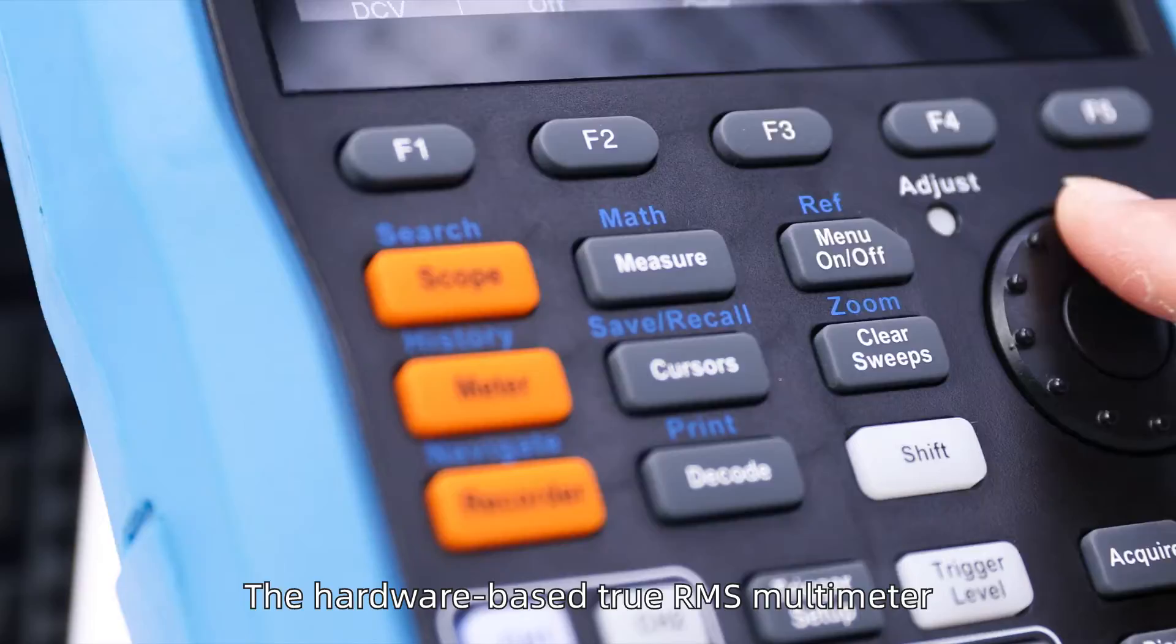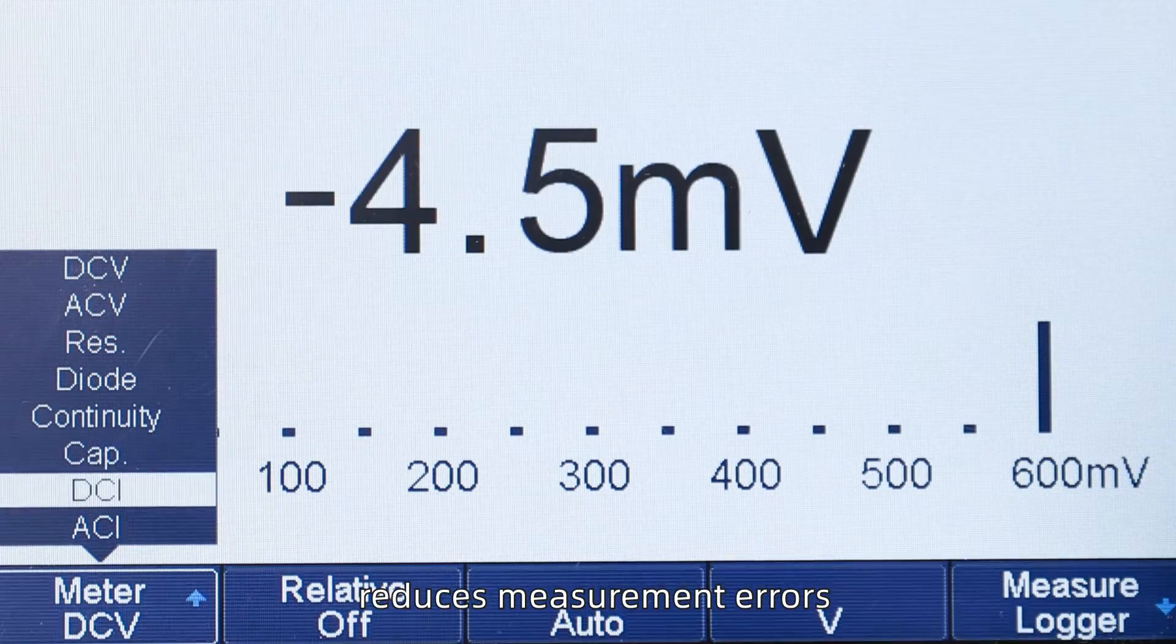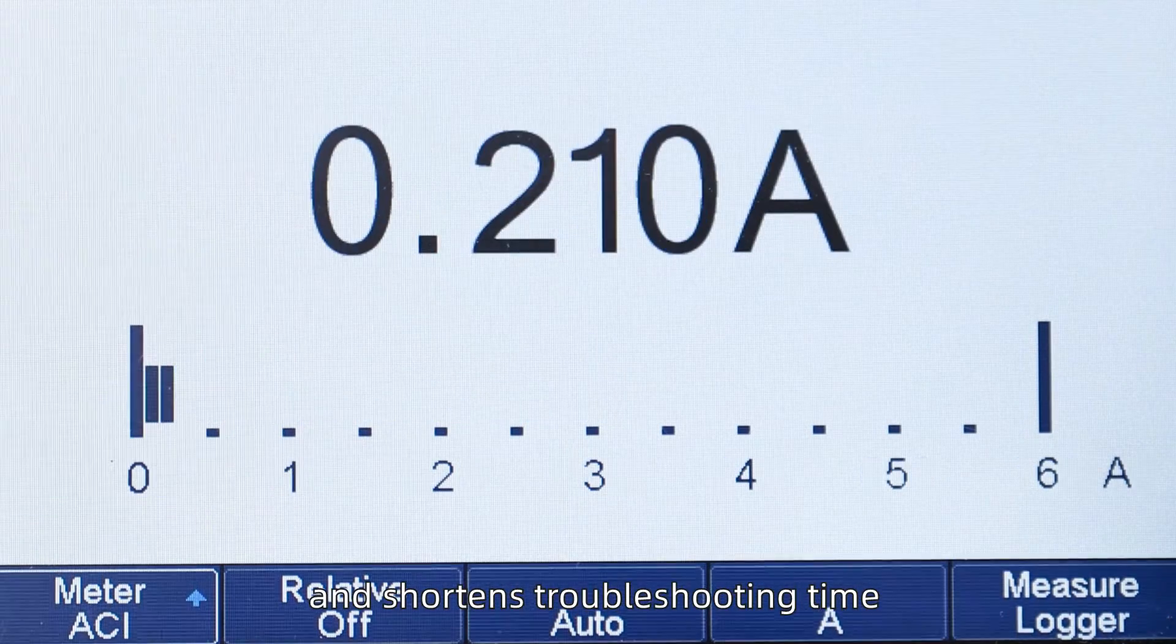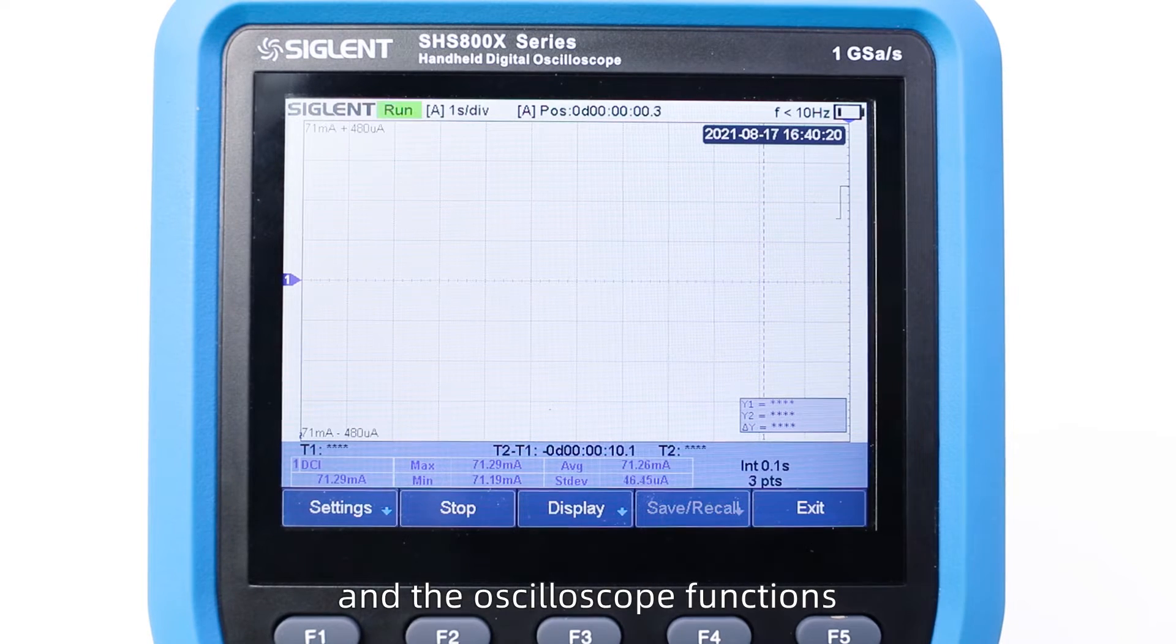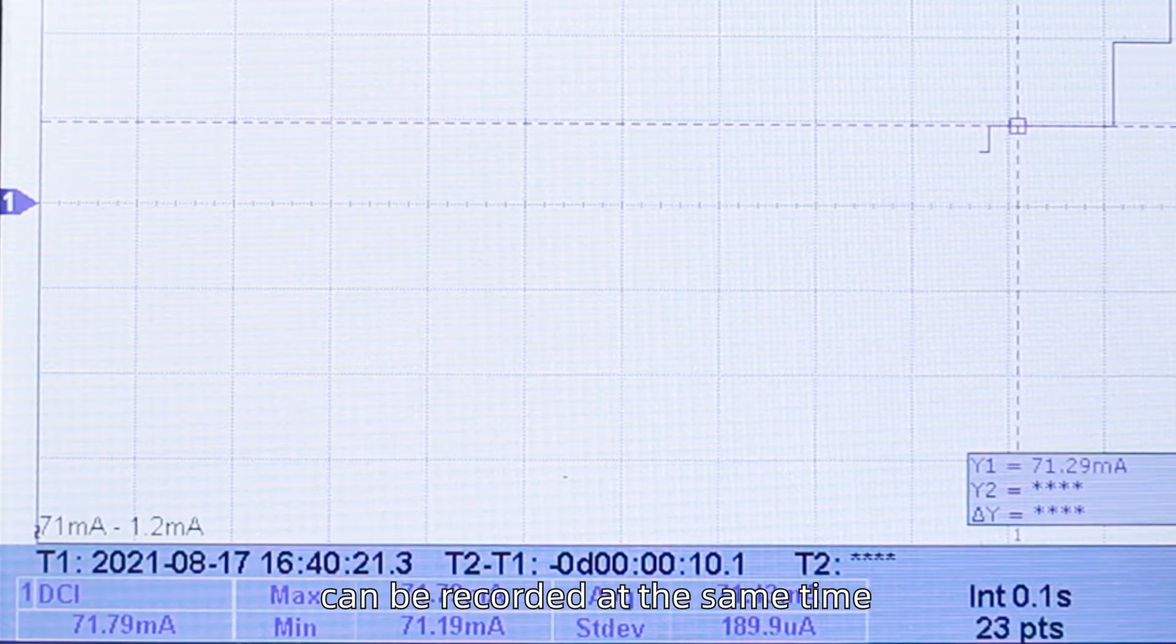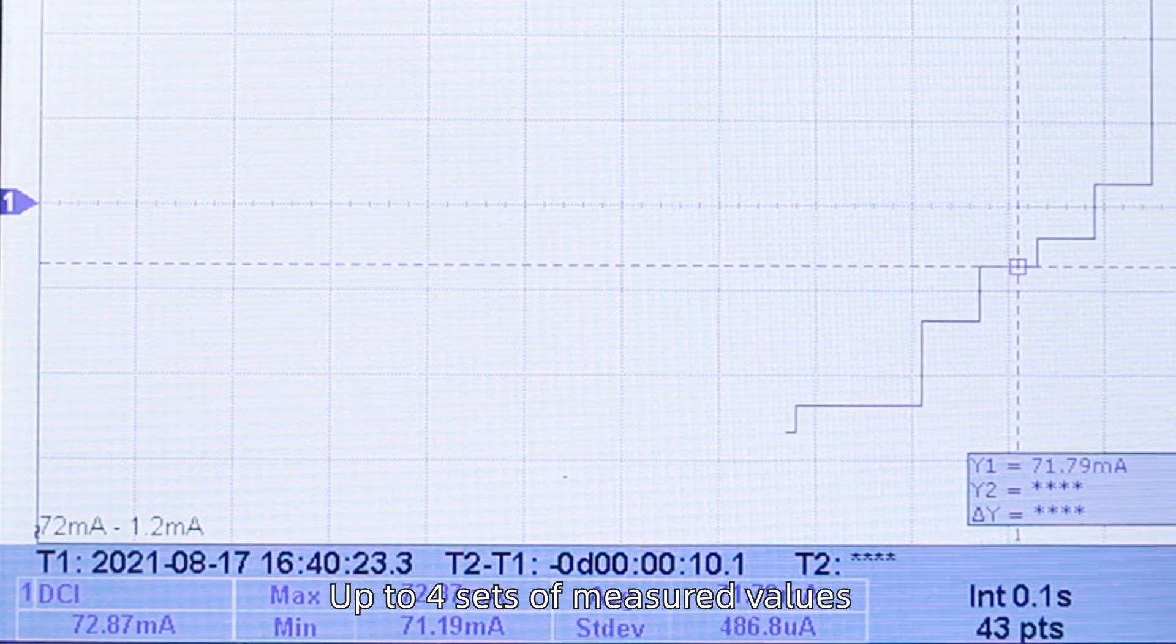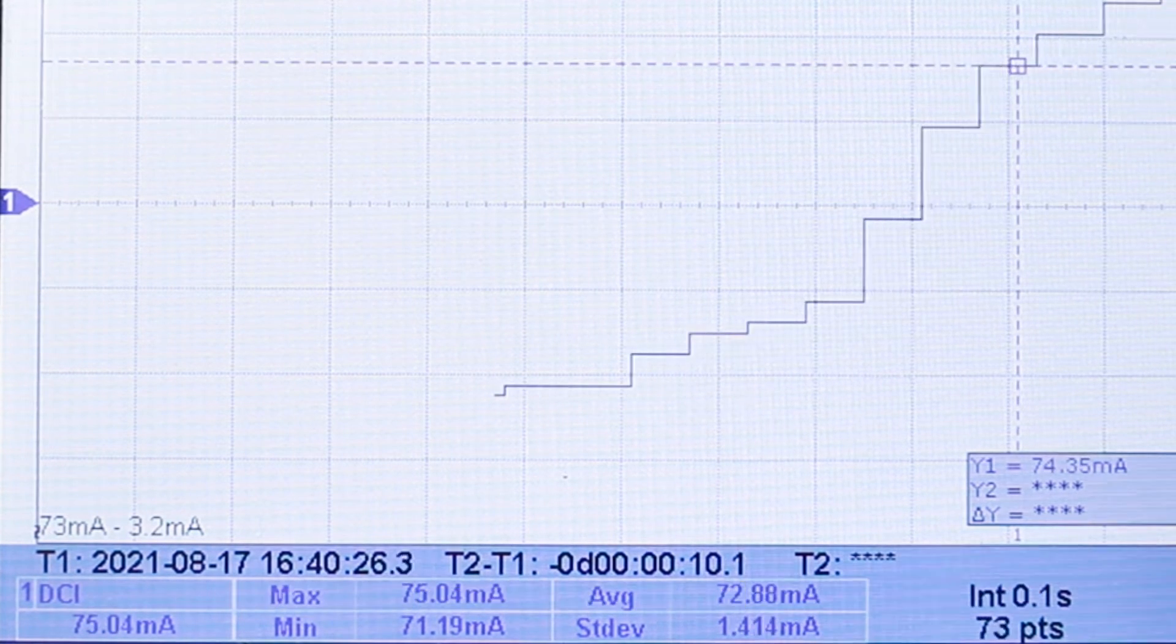The hardware-based TrueRMS multimeter reduces measurement errors and shortens troubleshooting time. The measured values of the multimeter and oscilloscope functions can be recorded at the same time. Up to four sets of measured values can be recorded simultaneously and played back later.